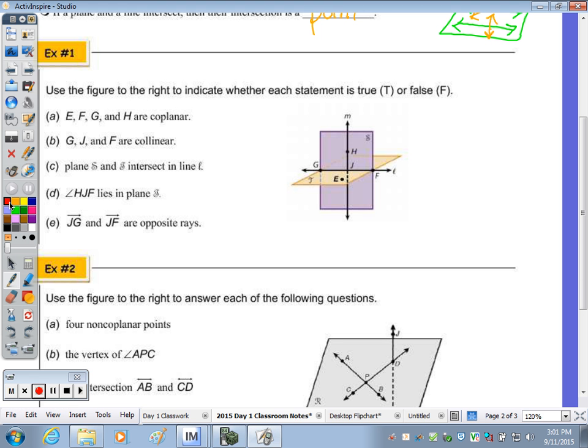All right, example number one, and if you have highlighters, it's good to highlight, or at least mark up the picture. If I'm looking at E, F, G, and H, are they coplanar? Ryan, is that true or false? So given the statement that they are coplanar, is that true or false? True. And again, because E and G are on the same line that are on the intersection, it's E and H that are on two different planes, so this is false.